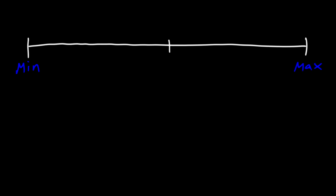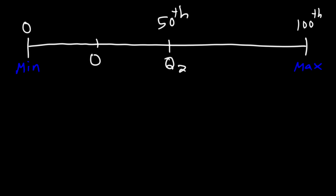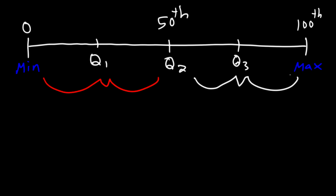Now the median of the data is the second quartile. This is basically the 50th percentile. The minimum will be at the 0th percentile and the maximum is basically the 100th percentile. Now Q1 is going to be the median of the lower half of the data and Q3 is the median of the upper half of the data. And so that's how you could find the three quartiles.